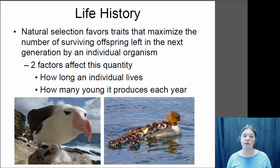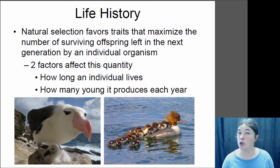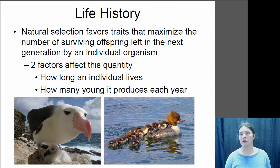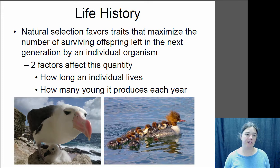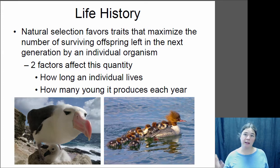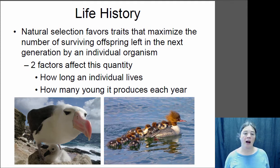Here are two extremes of life history strategy. A merganser generally lives two to three years, has only a few opportunities to reproduce, and tends to have many babies at once. This is what we call an R-selected species — lots of babies at once, but little investment per individual baby. On the other extreme, an albatross lives for 60 years and produces one baby every two years — a K-selected species. K stands for carrying capacity. Each of these animals produces approximately the same number of babies in their entire lifetime; the albatross does it slowly over 60 years, the merganser quickly over three.